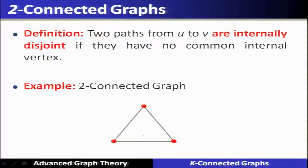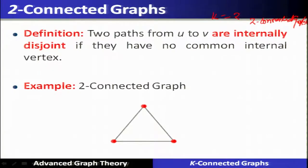Starting with a value of K more than 1, let us start with 2-connected graphs. When K is equal to 2, it becomes 2-connected graphs. The definition says that two paths from U to V are internally disjoint if they have no common internal vertex. This definition is to provide the connectivity between a pair of vertices, say U and V, in a graph.